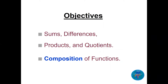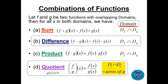Here we look at sum, difference, product, quotient, and composition of functions. If we have functions f and g, we can add them: (f+g)(x) = f(x) + g(x). That's the sum. The domain of this sum is the domain of f intersected with the domain of g. For the difference, (f−g)(x) = f(x) − g(x), and the domain is the same: domain of f intersection domain of g.